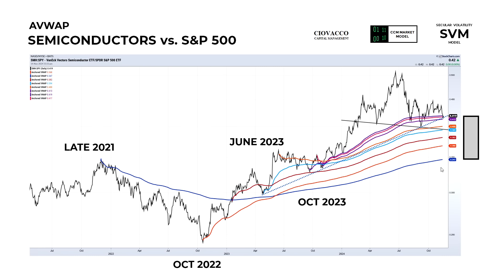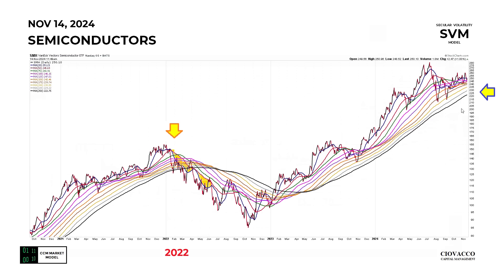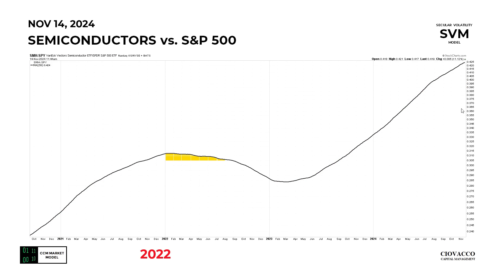So far, this chart, this chart, and the slope of the 250-day moving average are all telling us to try to remain patient and see how things unfold — but to do so with a flexible, unbiased, and open mind.